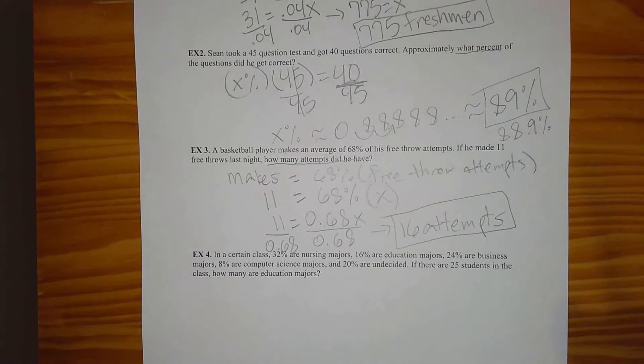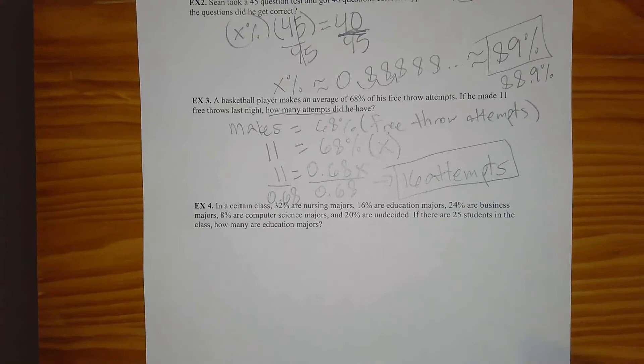Sometimes with word problems you have to think about the context and what you should be rounding to. You can't have a decimal number of throws or attempts, so we do need whole numbers.